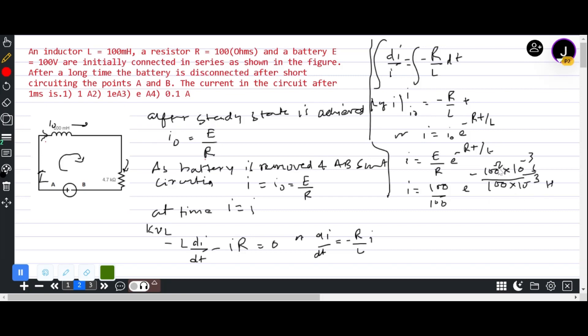1. We have 100 by 100 which is also 1, so we have e to the power minus 1. So i equals 1 by e, and that is one of the options.